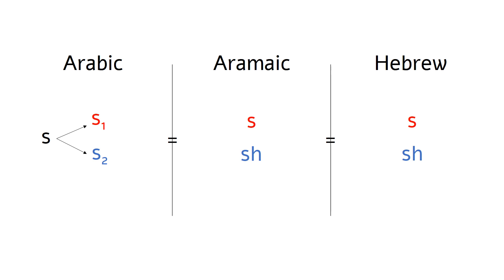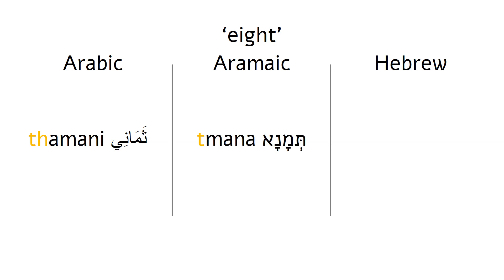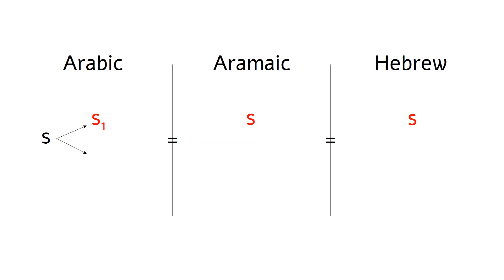There are a whole lot of examples for this shift. If you want to look further, look for the words person, piece, and five in all three of these languages. Let's complicate it just a little bit more with the word for eight. An Arabic TH, like in the word 'thin', is equivalent to T in Aramaic and SH in Hebrew. So actually, Hebrew SH also came from two separate origins: the one that is reflected in Aramaic SH and in Arabic S, and the one that is reflected in Aramaic T and in Arabic TH.